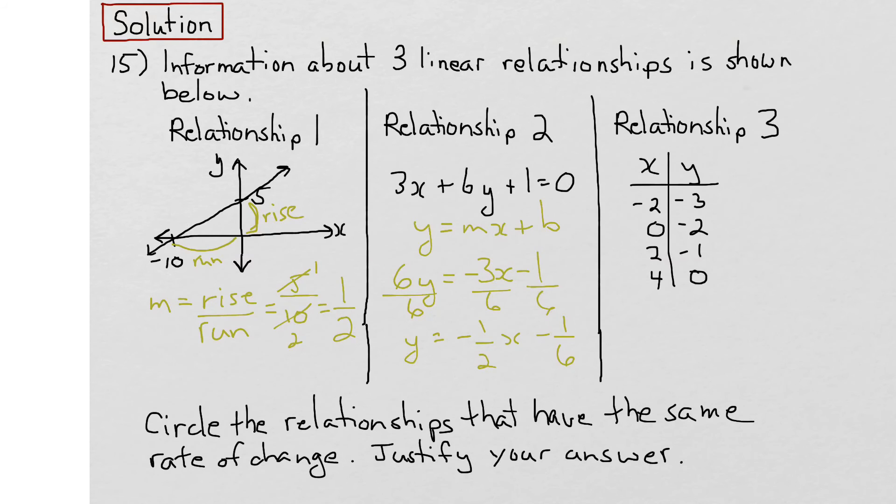Now in the third relationship, we're given a table of ordered pairs. When that's the case, slope is a measure of the change in y divided by the change in x.